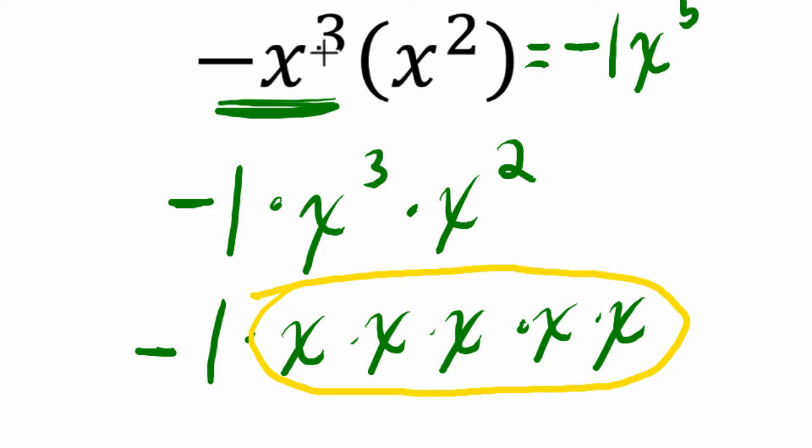We can also see that three plus two is five, that shortcut works, and we have negative one times one is negative one, that would work as well.